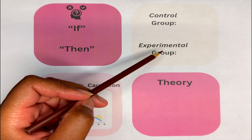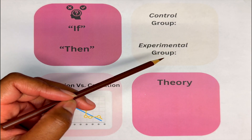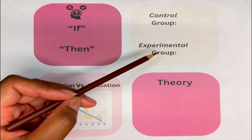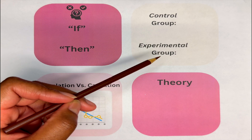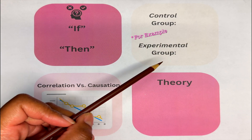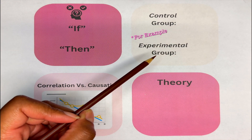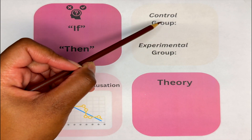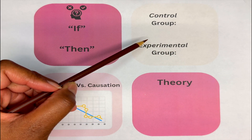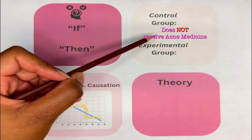The next terms are control group and experimental group, which are important for the experiment step. For example, with a new acne medication, both the control group and experimental group have the same diet and sleep pattern. The only difference is one receives the acne medication while the other does not. The control group does not receive the factor being tested — they will not receive the acne medication.